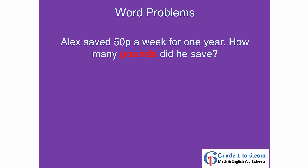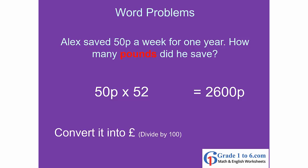Alex saved 50 pence a week for one year. How many pounds did he have? That's 50 pence times 52 weeks, which gives you 2,600 pence. Then you convert to pounds by dividing by 100, giving you 26 pounds.